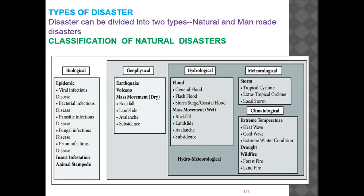Geophysical disasters are related to the Earth. When geophysical features such as mountains, rivers, or plateaus are involved in disasters, those are geophysical disasters. Examples include earthquake, volcano, rockfall, landslide, avalanche, and subsidence. An avalanche is the movement of a block of ice or snow down a hillslope, resulting in damage to animal life, human life, and property within a short time.